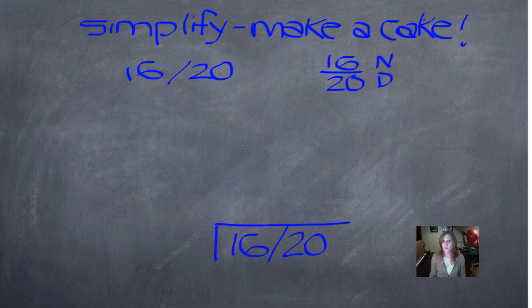I'm actually writing that entire fraction in the bottom layer of the cake. So 16, fraction bar, 20. And I have to think to myself, what number will divide evenly into both 16 and 20?